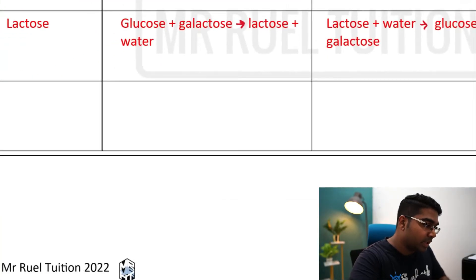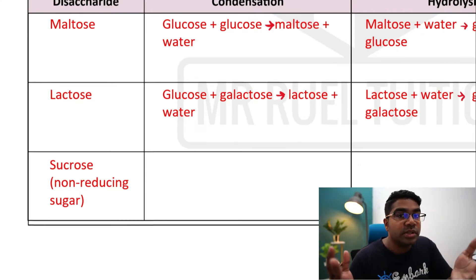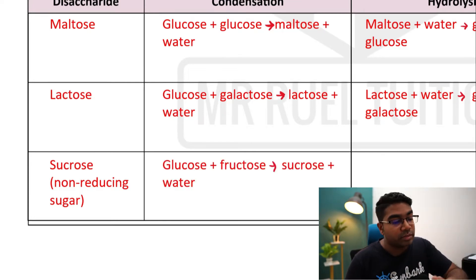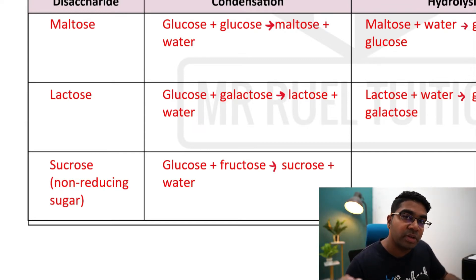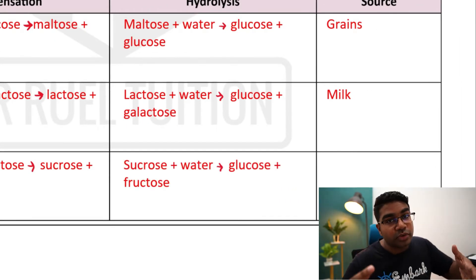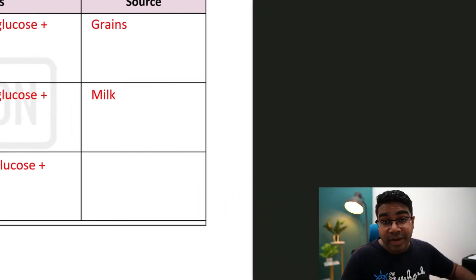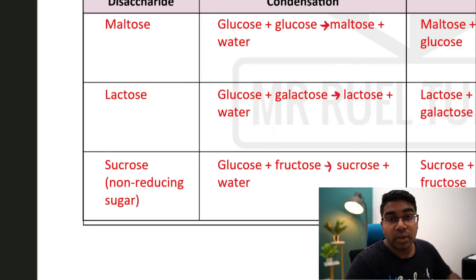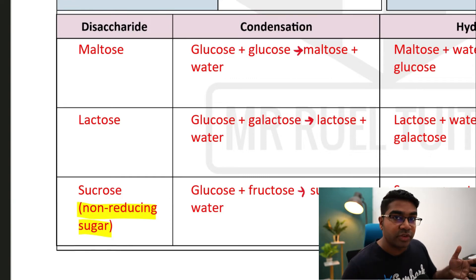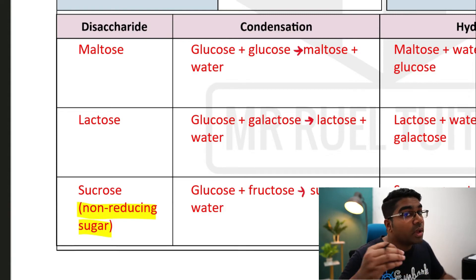The last disaccharide is sucrose — the form of sugar that we add to our drinks. Sucrose consists of glucose and fructose: glucose and fructose combine by condensation to give sucrose and one molecule of water. Hydrolysis is the opposite: add water to sucrose under the right conditions to get glucose and fructose. Sucrose is commonly found in sweet fruits and sugarcane. It is worth noting that sucrose is the only non-reducing sugar among the disaccharides — maltose and lactose are reducing sugars and will give a brick red precipitate with Benedict's solution, whereas sucrose will not.